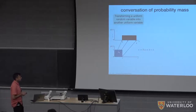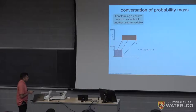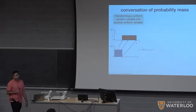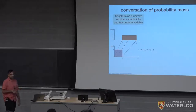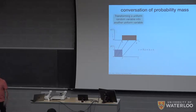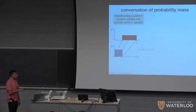Normalizing flows work on the principle of conservation of probability mass. Both the source and target are probability distributions and must sum to one. For a random variable z on the interval [0,1], applying the function T(z) = 3z + 1 gives a uniform random variable x on [1,4]. The probability density becomes 1/3, because the support is 3 times longer but the area must be conserved.